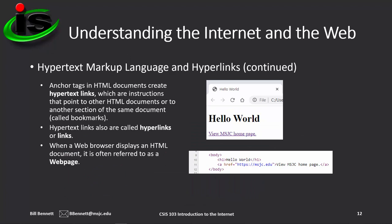On this screen, we're looking at adding an anchor tag to our HTML document. Anchor tags are how we create hypertext links — instructions that point to other HTML documents or another section of the same document, which would be called a bookmark. Hypertext links are also called hyperlinks or links. When a web browser displays an HTML document, it's often referred to as a web page. In the graphic, you can see the hypertext link that reads 'View MSJC Homepage,' and clicking it will take you to the MSJC Homepage.